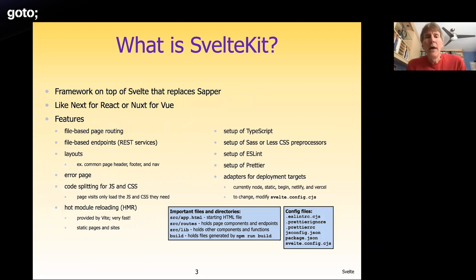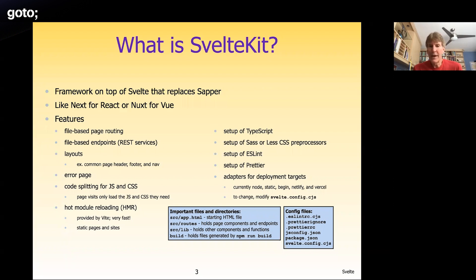SvelteKit is a framework that builds on top of Svelte. There was an earlier framework called Sapper that I talk about in my book — SvelteKit replaces that. Most of the concepts are the same, though some names have changed and the implementation has been improved. SvelteKit is currently in beta, but I want to tell you about some of the things coming there.